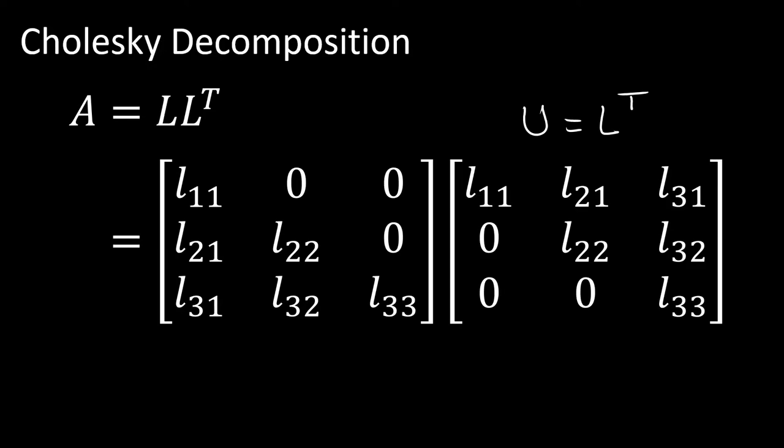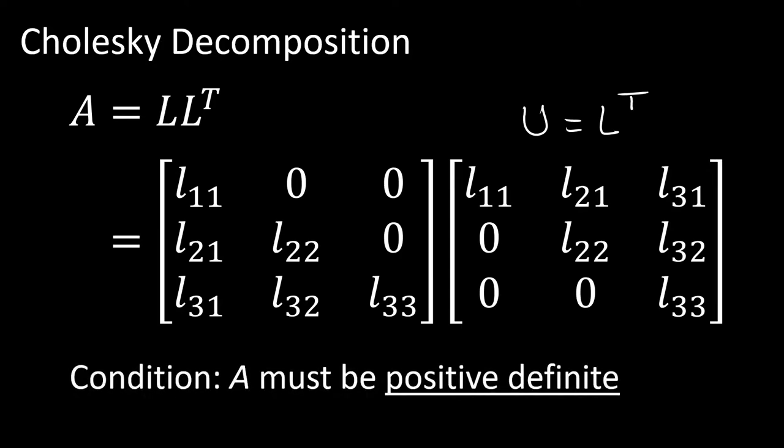All higher-level matrix decompositions have initial conditions that must be satisfied. For the Cholesky decomposition, that initial condition is that our A matrix must be what is called positive definite. A positive definite matrix is more of a pure linear algebra topic, so I'm not going to go into too much depth — I'll leave links in the description below where you can find more information. I'll just quickly review some of the key concepts.